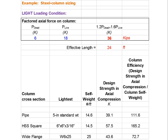We're going to go through a sizing procedure to illustrate that point by dealing with lightly loaded conditions. The factored axial force on the column is 6 kips dead and 18 kips live. When we multiply 1.2 times 6 plus 1.6 times 18, we come out with a total factored load of 36 kips. We're going to assume the effective length of this column is 24 feet, such as we might find in a big box store. So we have light loads from the roof and a tall column — classic conditions for a slender column — and we're going to start by sizing it for pipe.